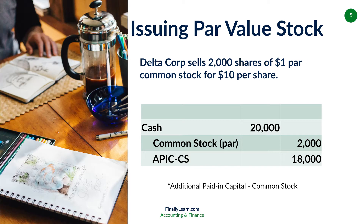This next problem, we're going to change the par to $1. The $1 is less than the market value. Our cash is $20,000 — 2,000 shares times $10. Our common stock has to be at par, which is 2,000 shares times $1 for the par. We credit common stock for $2,000. Then our last account, the plug number for the $18,000 remainder, is going to be an account called additional paid-in capital for common stock — or sometimes called paid-in capital in excess of par value, common stock. You're welcome to abbreviate it and just call it APIC, A-P-I-C.